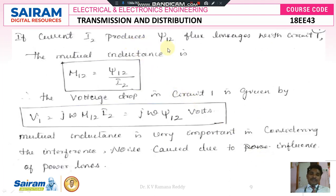The current I2 produces ψ12 flux linkages with circuit 1, then the mutual inductance M12 is equal to ψ12 divided by I2. The voltage drop in circuit 1 due to flux linkage from one conductor to another is V1 equals J omega M12 into I2. Since M12 into I2 is nothing but ψ12, we can write V1 is equal to J omega ψ12. Therefore mutual inductance is very important concerning interference, because noise is caused due to the telephone influence factor because of the power lines.